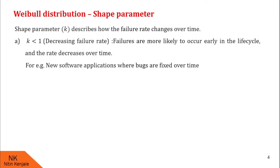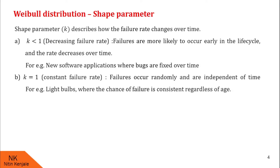For example, you can consider a new software application where bugs are fixed over time. Therefore, as time passes, the software becomes failure free. When k is equal to 1, the failure rate is constant. That means failures occur randomly and are independent of time. For example, light bulbs where the chance of failure is consistent regardless of age.